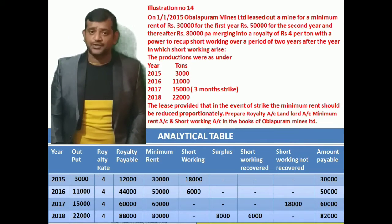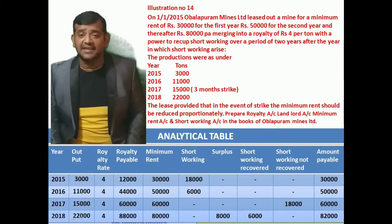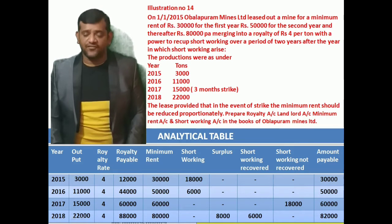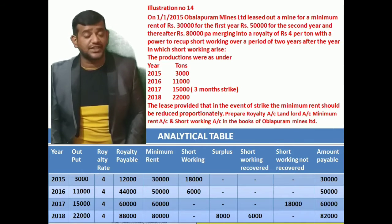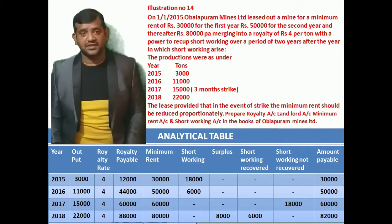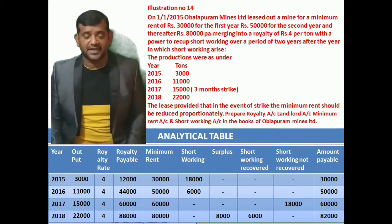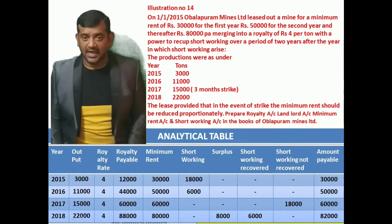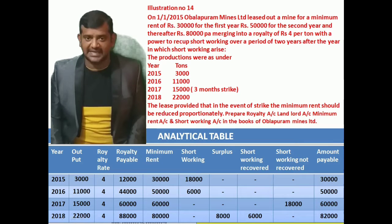The productions were as under: in the year 2015, 3,000 tons; in the year 2016, 11,000 tons; in the year 2017, 15,000 tons. There was a three months strike during the year 2017. Then in the year 2018, 22,000 tons were the production. The lease provided that in the event of strike, the minimum rent should be reduced proportionately.